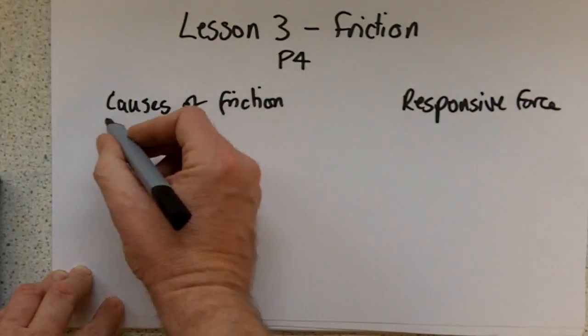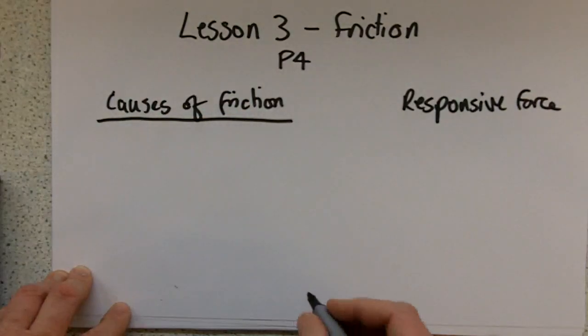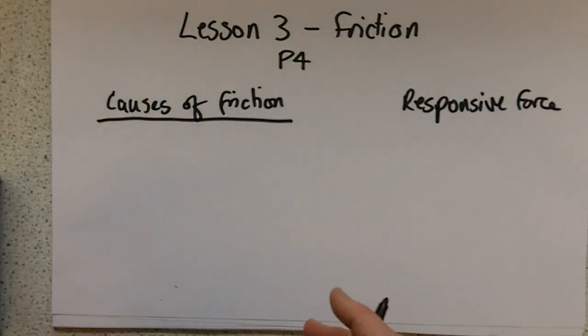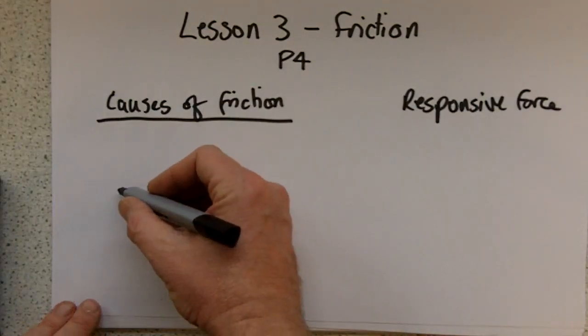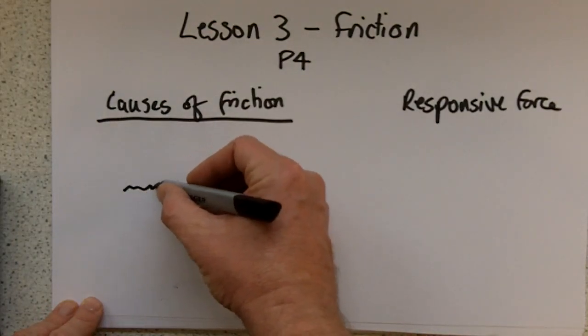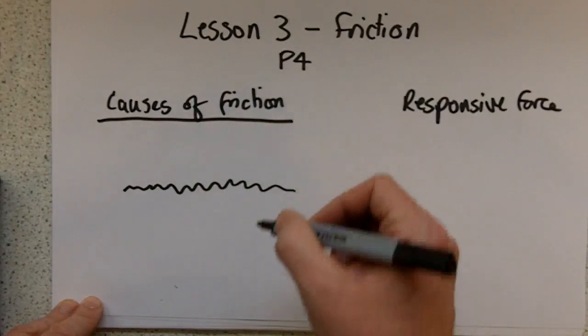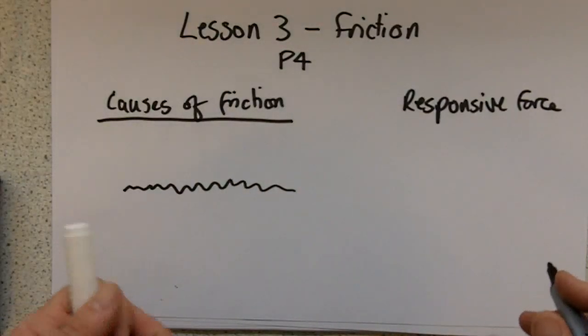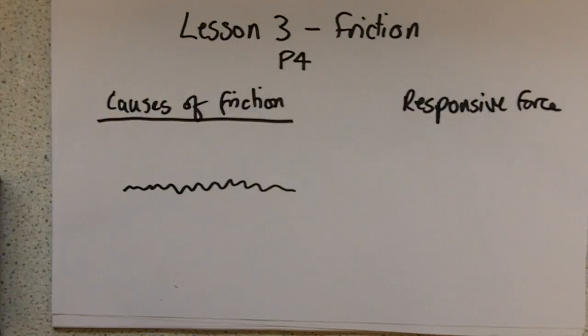So, what causes friction? Well, if you examine a surface, however smooth that surface may appear to be, so a sheet of glass or a kitchen worktop or a table, if you actually look at it under a microscope, what you find is however smooth it might be, it's actually covered in lots of ripples and bumps.